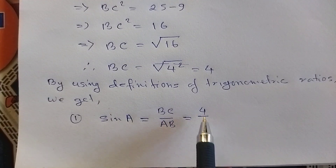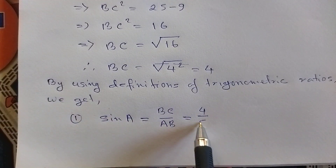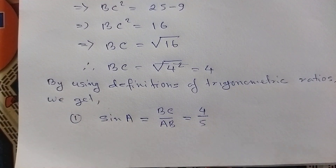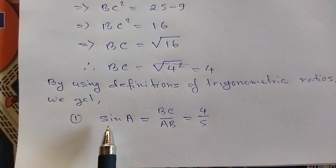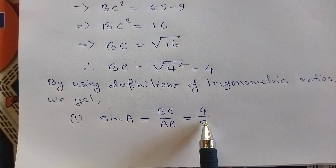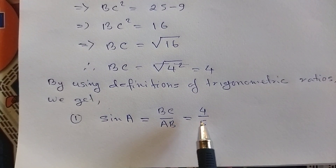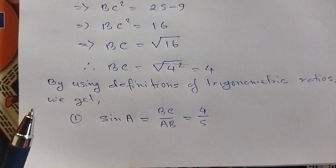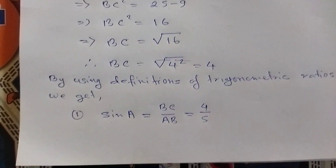BC value is 4, AB value is 5, so sin A equals 4 by 5.